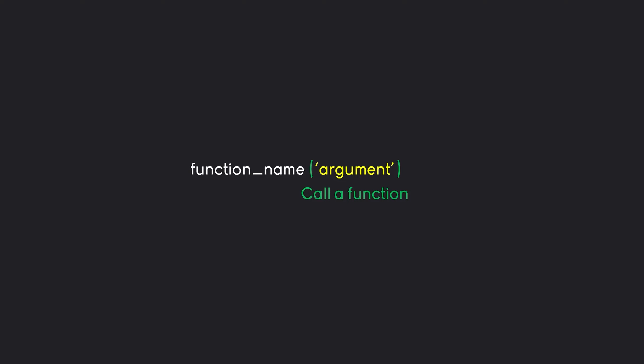It could, for example, ask for user input, or it could print out a value, or it could do a host of other things. After that, it can return a value, although it doesn't necessarily have to. For example, input is returning a value - the user input - but the print statement does not return a value. There are quite a few inbuilt functions, and later on we are also learning how to create our own custom functions.